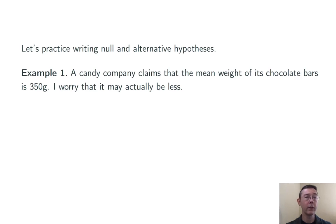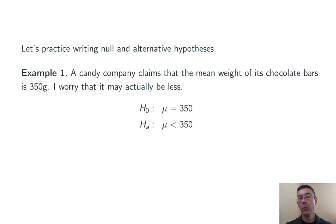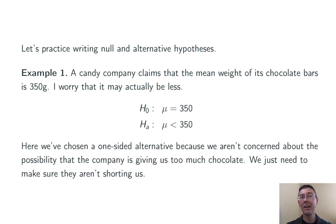This first example is taken directly from my last video. A candy company claims that the mean weight of its chocolate bars is 350 grams. I worry that it might actually be less. So the null hypothesis is going to be the company's claim — that's the thing I want to get evidence against. I'm picking a one-sided alternative, mu less than 350 grams. The reason is that I'm not concerned about the possibility that the mean weight is greater than 350 grams. I don't mind if they're giving customers too much chocolate; I'm just concerned they might be shorting us.